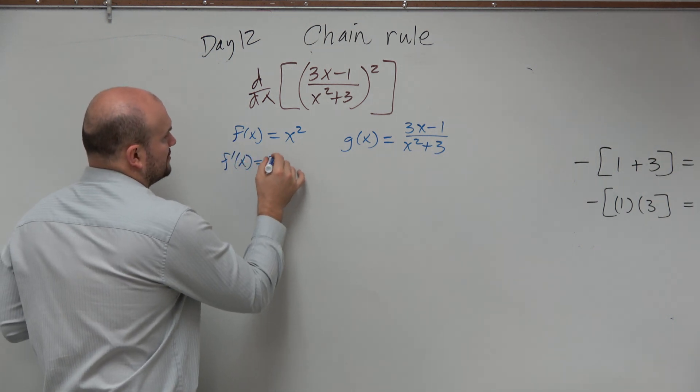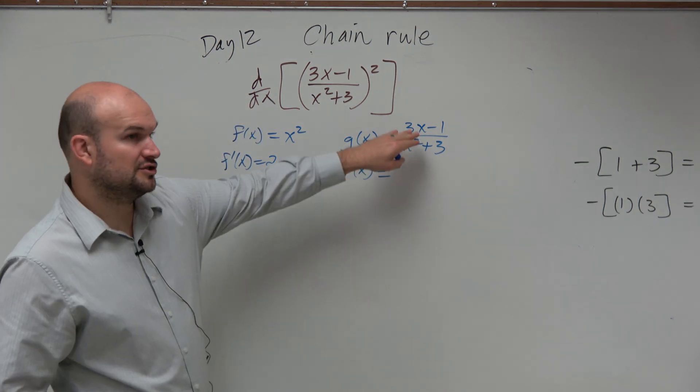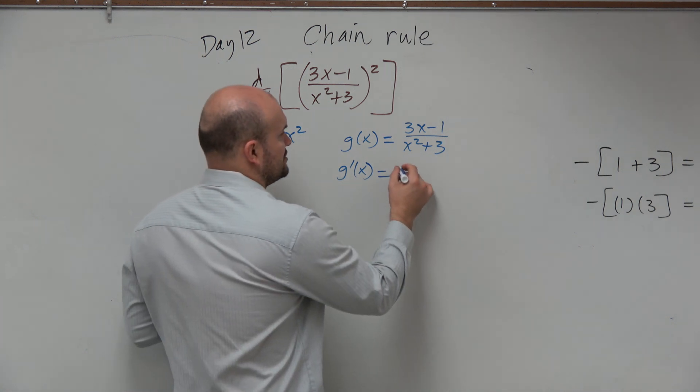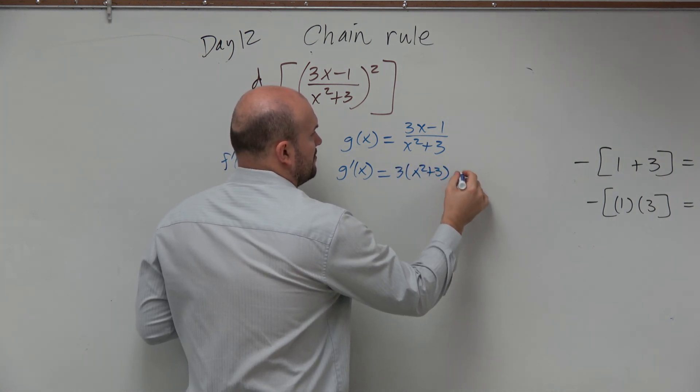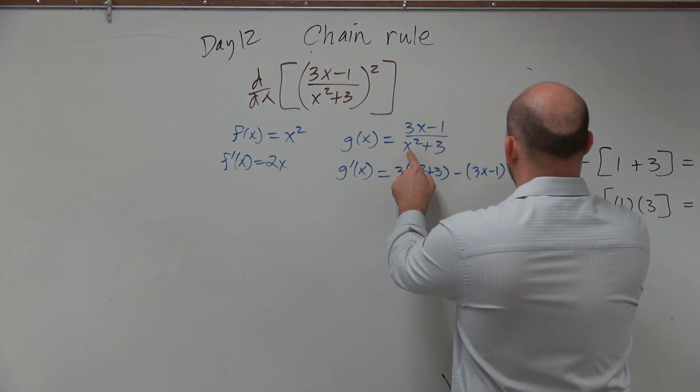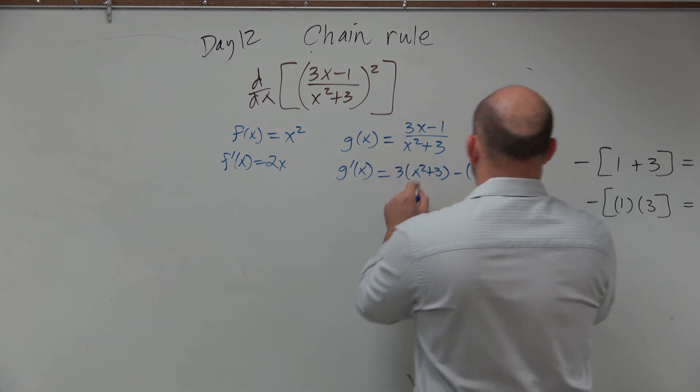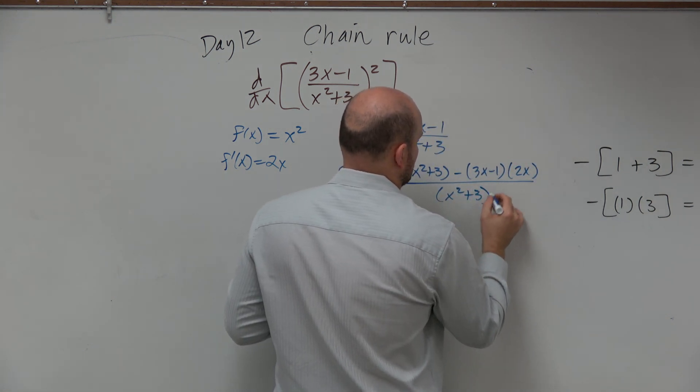f prime of x is equal to 2x. g prime of x is equal to, I'm just going to do the derivative of the first expression, which is 3, times the second expression, minus my first expression, times the derivative of my second function, which is 2x, all over x squared plus 3 squared.